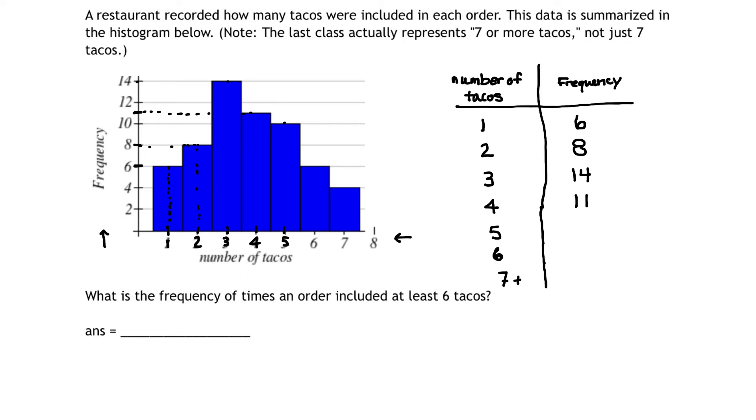The frequency of five tacos, that's 10. The frequency of six tacos, that's six. And the frequency of seven or more tacos, that's coming over to be four.